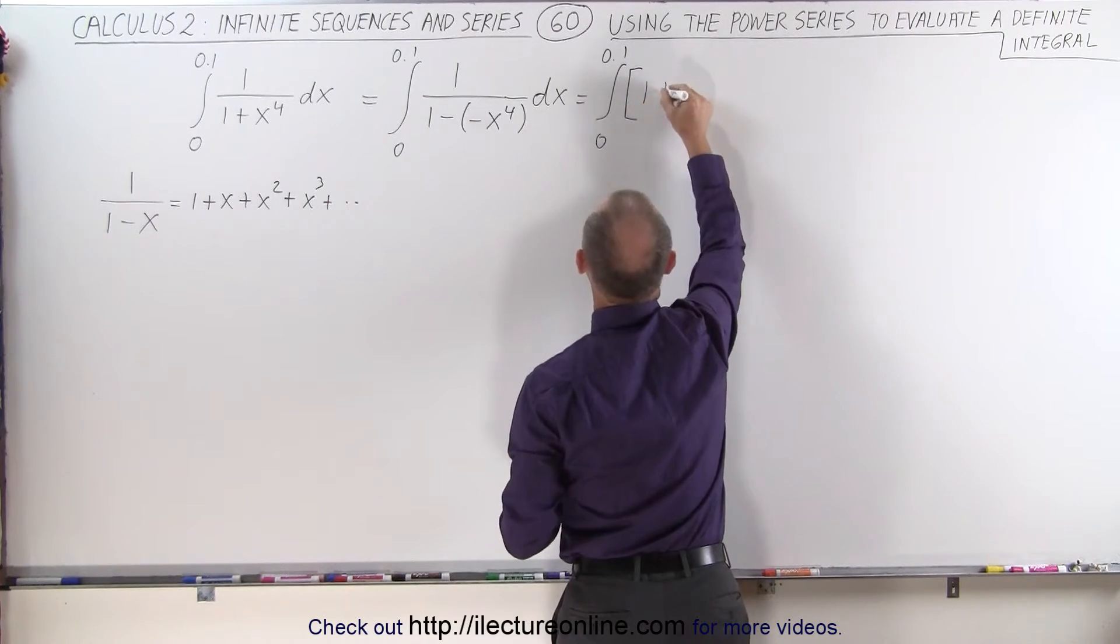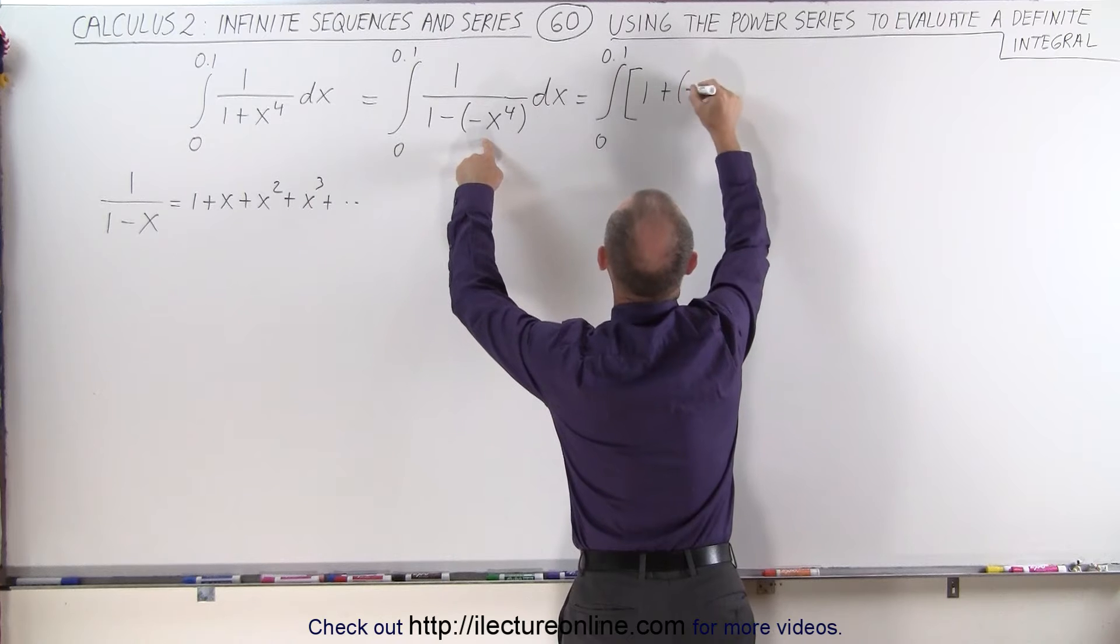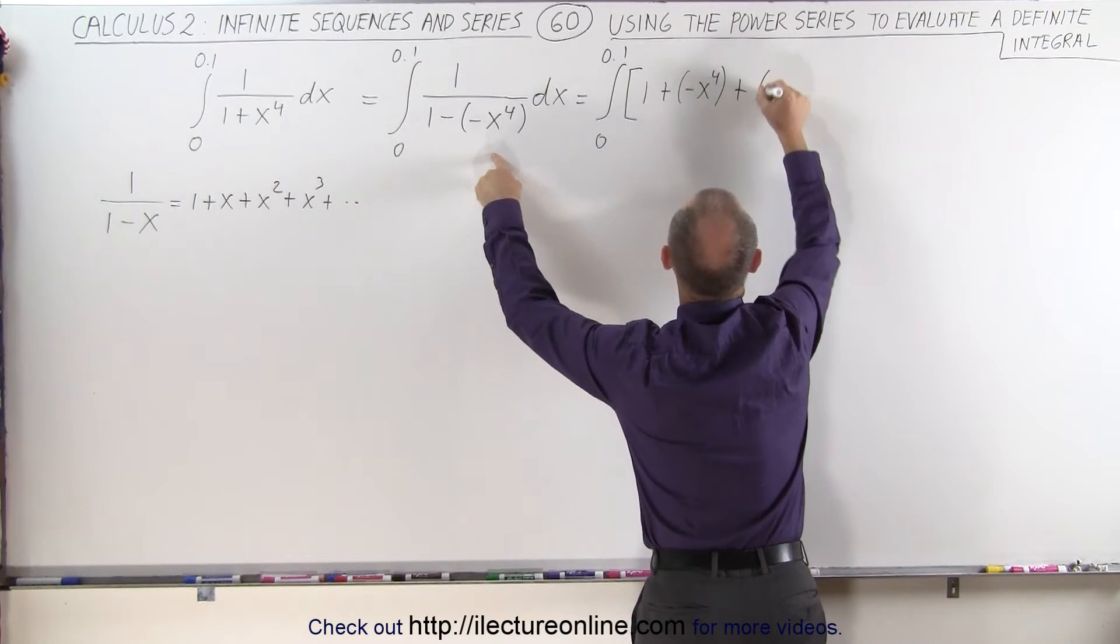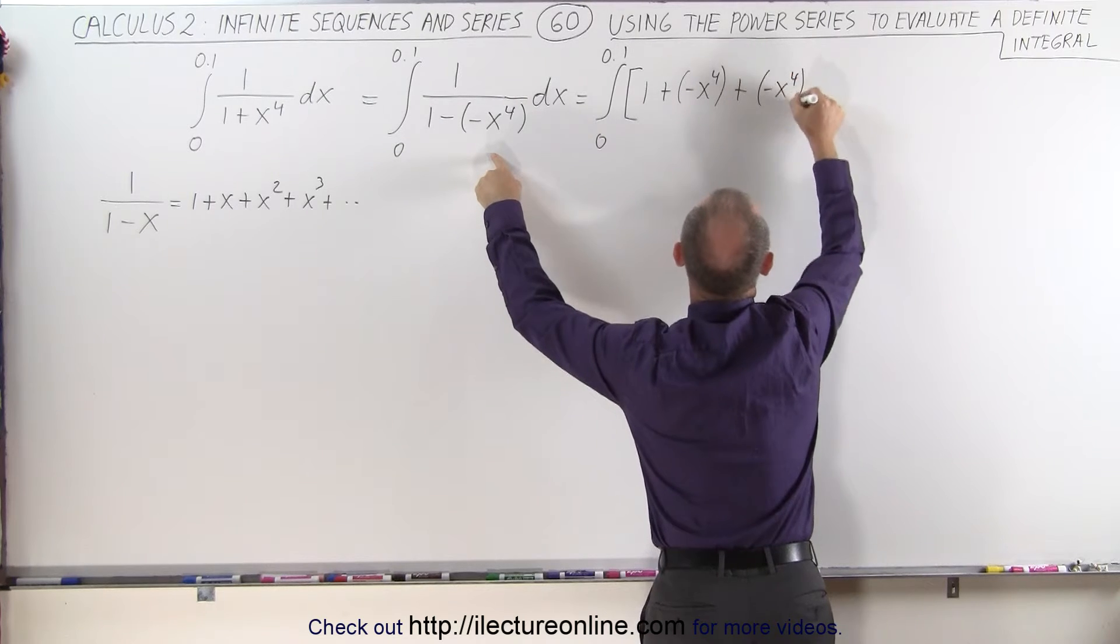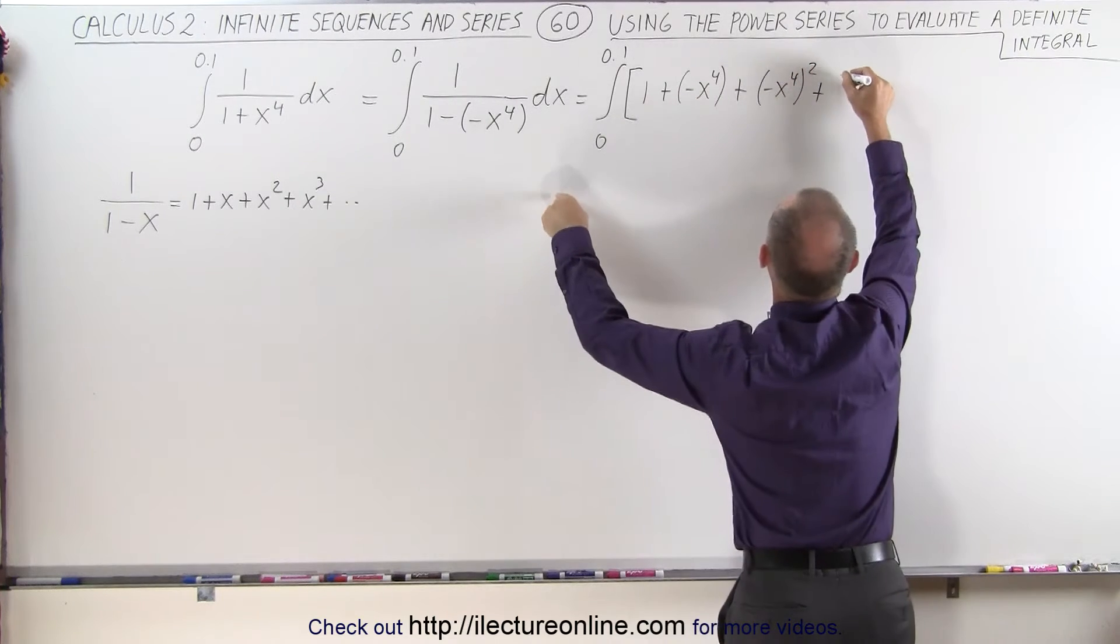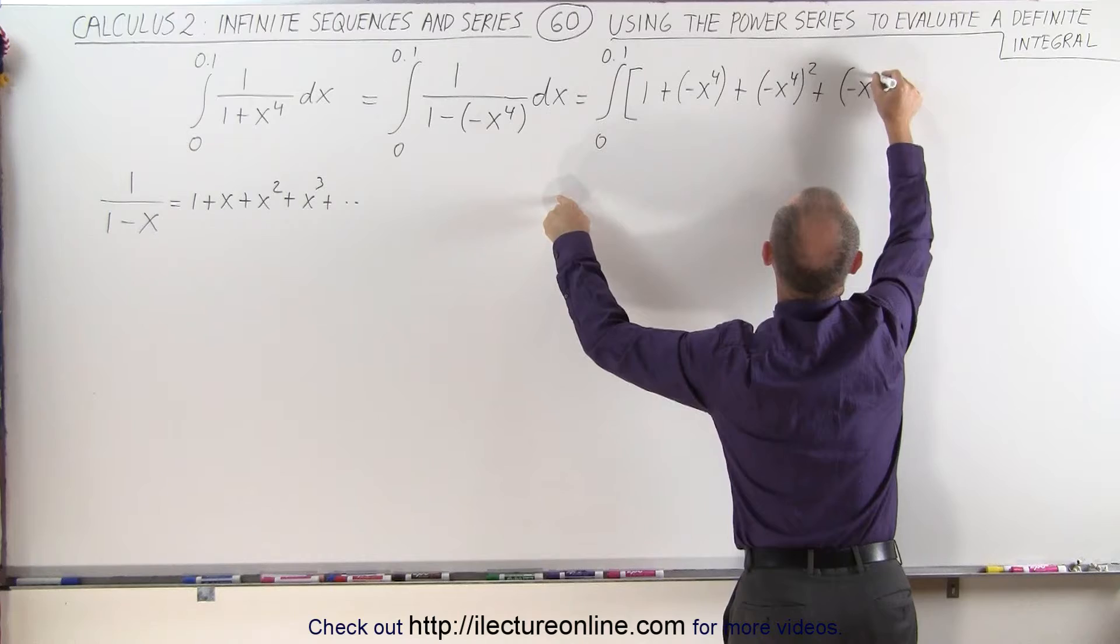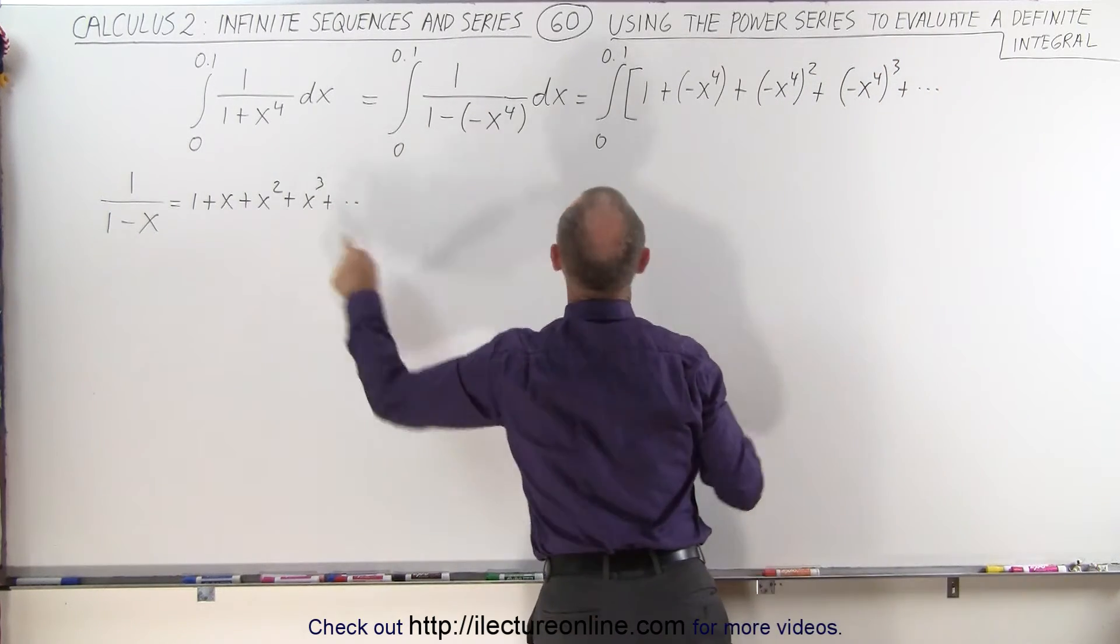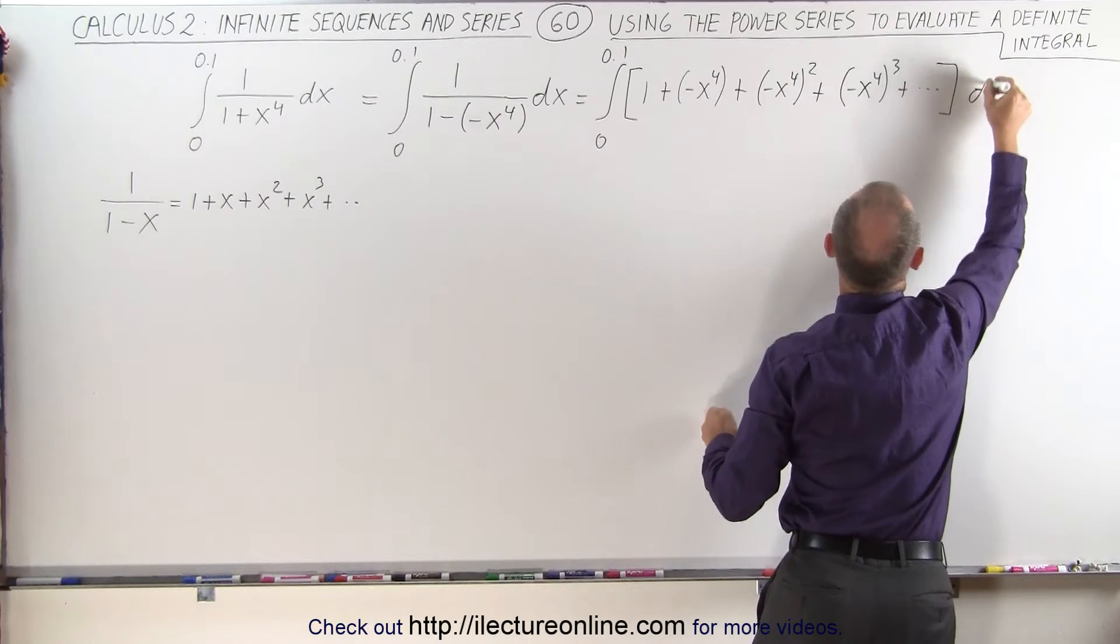This is going to be 1 plus this quantity, minus x to the fourth, plus this quantity, minus x to the fourth quantity squared, plus this quantity again, minus x to the fourth quantity cubed, and so forth, just like we did over here. Of course we have to multiply this times dx.